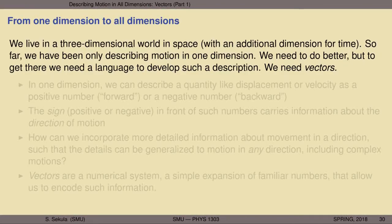We want to go from one dimension to all dimensions. We live in a three-dimensional world, in space. There is an additional dimension for time, and we'll think about that later, but so far all we've been doing is describing motion in only one dimension. Think about the train moving forward or backward along a track. The track is the dimension, and the train is constrained to only move on that dimension. But we need to do better, because in reality motion is complex and it takes place in at least one dimension, but it can be two or three. The most realistic motions take place in three dimensions. But to get there, we have to have a language in mathematics to develop such a description of the world around us, and for that we need vectors.